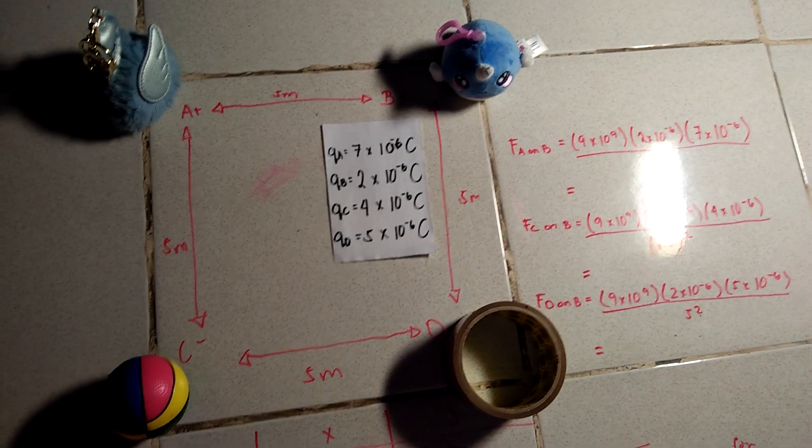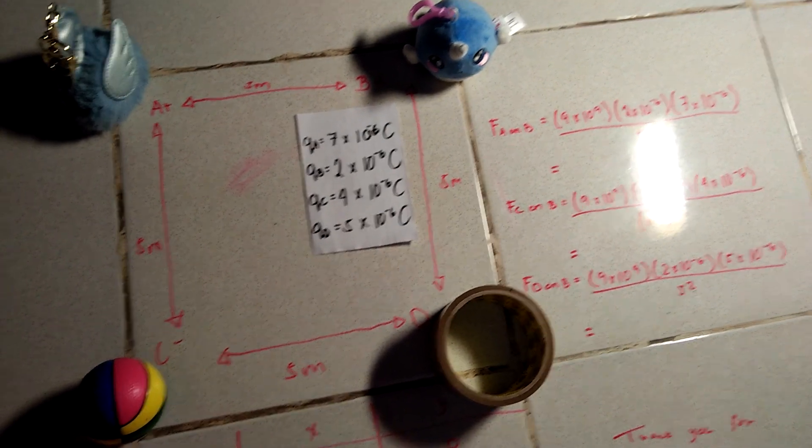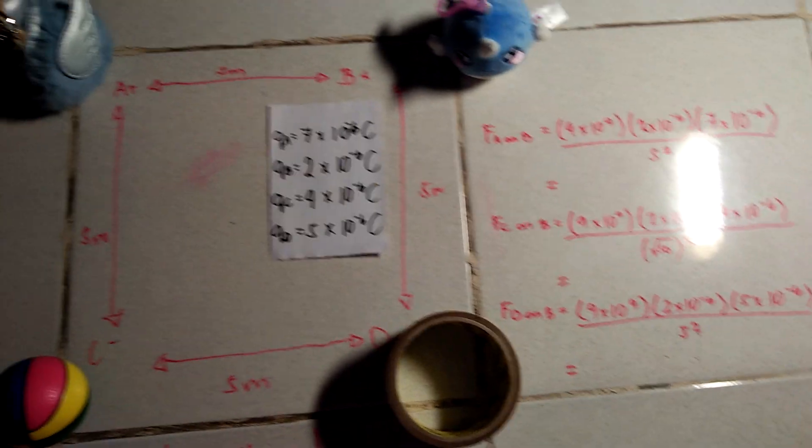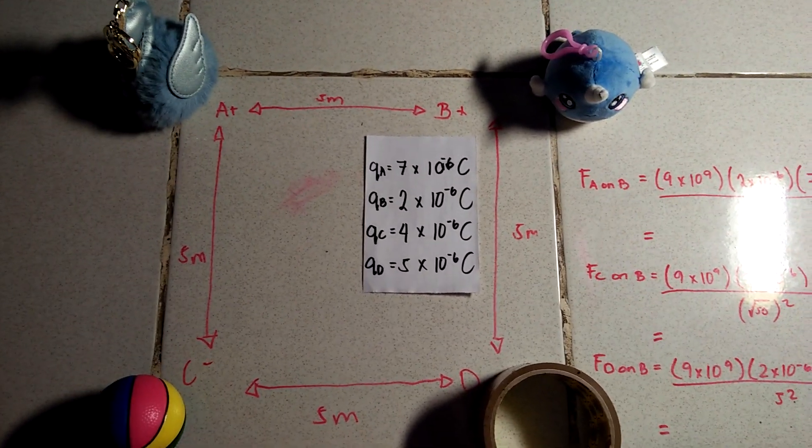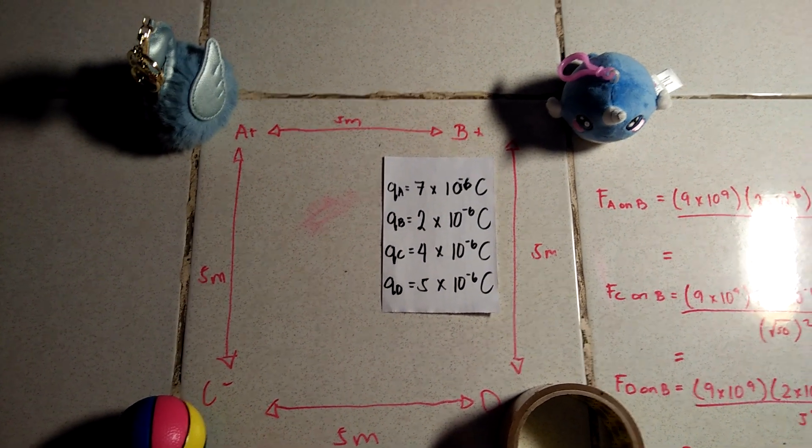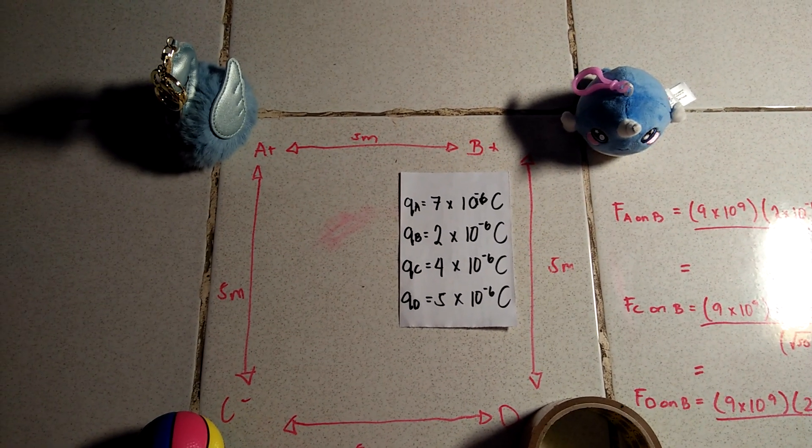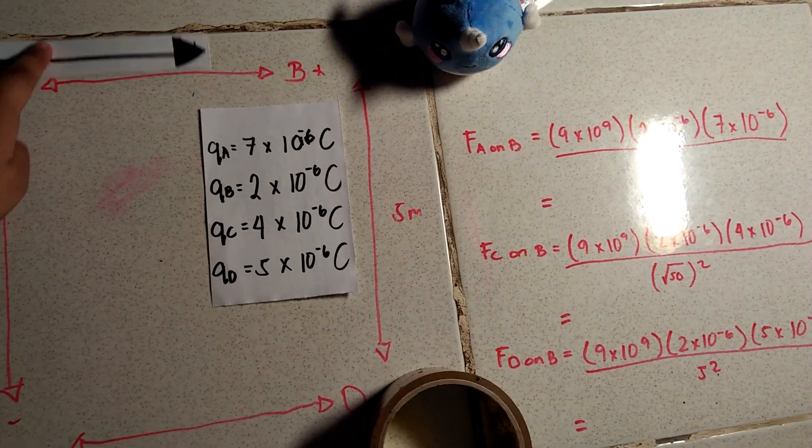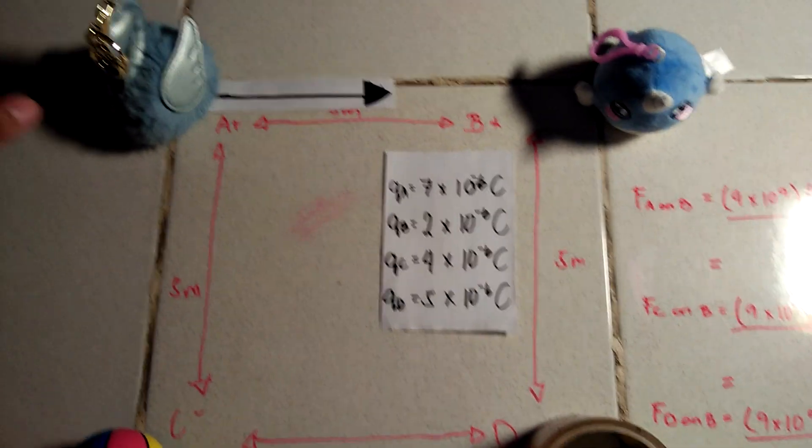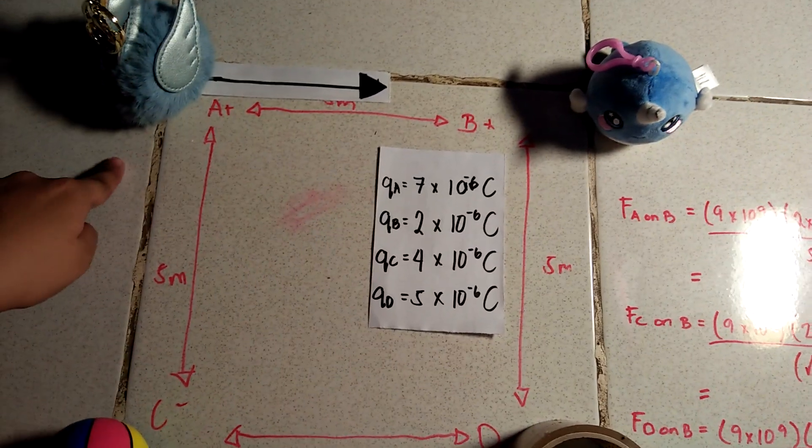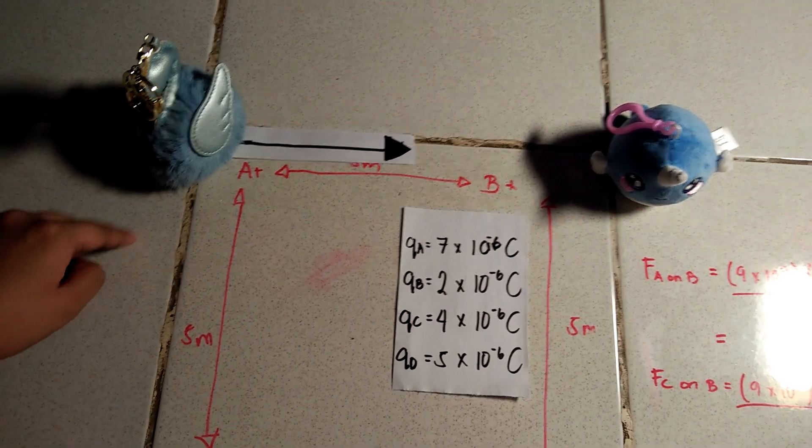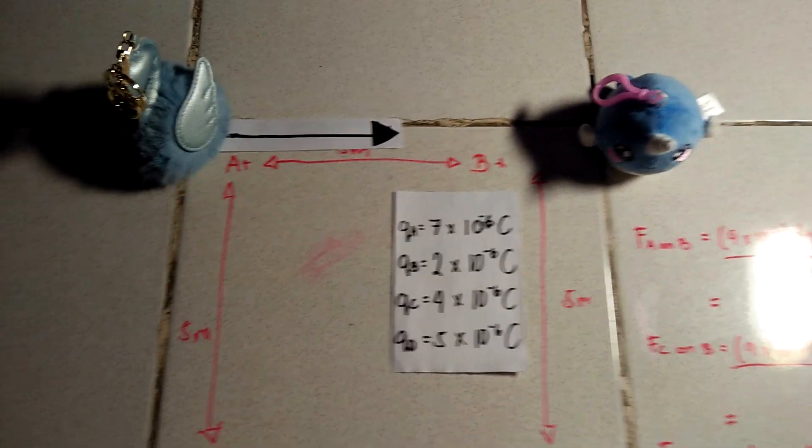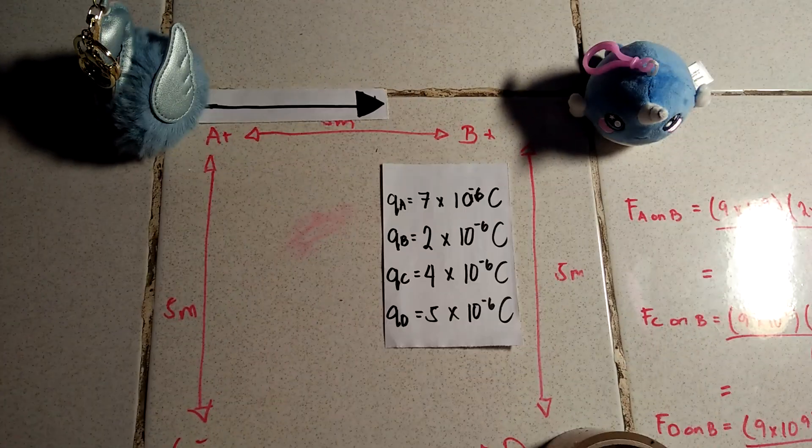So to understand the forces, since A is positive and B here is also positive, the force that A is going to apply on B is a pushing force. So we can denote that pushing force by this one. The reason it's here is because the swan is the one exerting. So yeah, it's pushing away. So the direction to that is to the right.